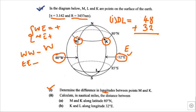So we are adding because they are in different hemispheres. 8 plus 2 is 10, write 0, carry 1. 4 plus 3 is 7, plus 1 is 8. So 80 degrees. The difference in longitude between point M and K is 80 degrees. This is our answer for Roman numeral 1.